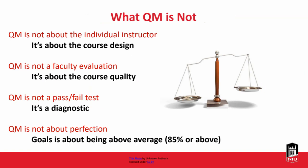Part of looking at QM is also understanding what they are not. First, QM is not about the individual instructor whatsoever — this is not any type of faculty or instructor evaluation. It is strictly about course design. QM is not a faculty evaluation; it goes back to course quality. Design and quality go hand in hand, but it's not about the individual who's teaching the course.